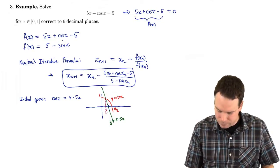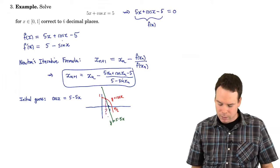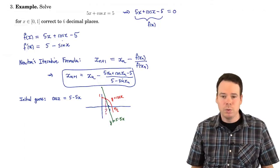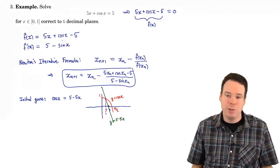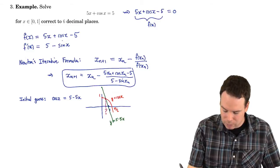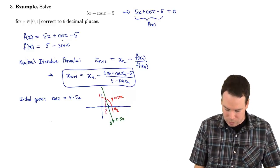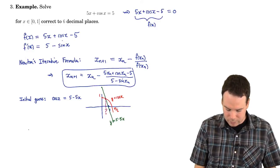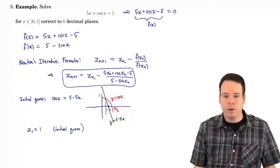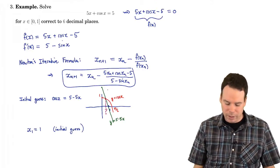That intersection value is the thing I'm interested in, and I notice it's a little bit less than 1. Maybe I should choose 1 as my initial guess, or maybe a half — both would probably be good choices. So we're going to take x₁ equals 1 as our initial guess. Now we have an initial guess and our iterative formula, so we just start cranking away.